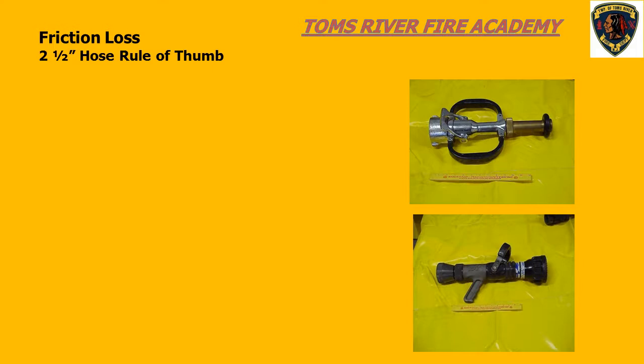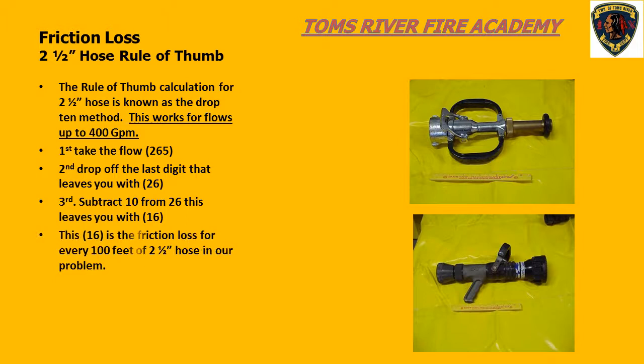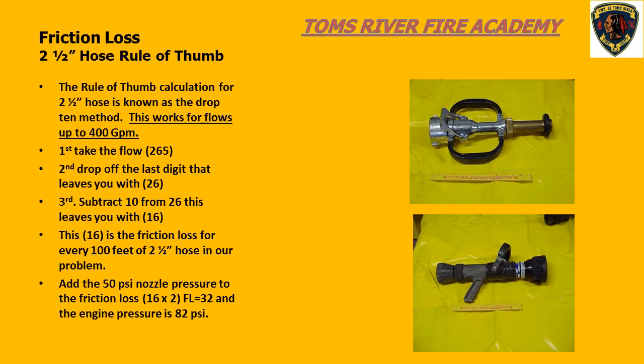The rule of thumb calculation for 2.5-inch hose is called the Drop 10 method. First, we take the flow — 265 gallons per minute — and remove the last digit, leaving us with 26. Second, we take 26 and subtract 10 from it — this is where we get the Drop 10 name. Once we subtract 10 from 26, we are left with 16.